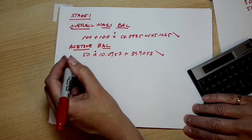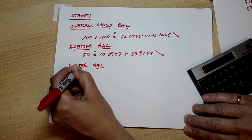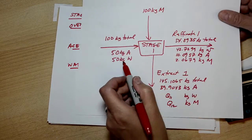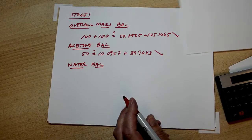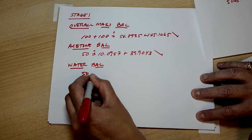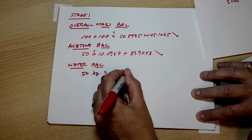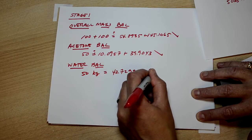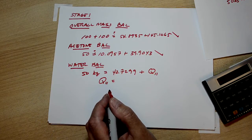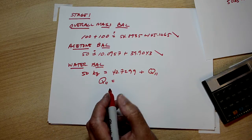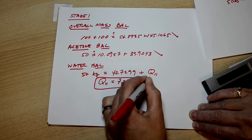All right, so now do the ones that are for the money here. Let's do the water balance. 50 kilograms come in, none, 42 and change, Q11. Q11 equals 50 minus 42.7299, which is 7.2701.